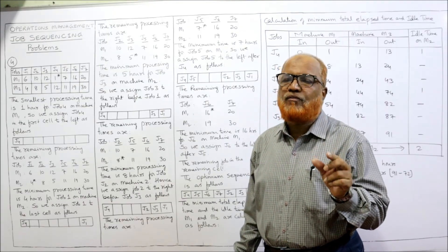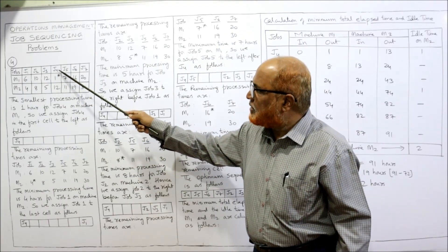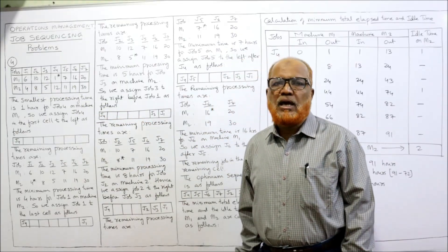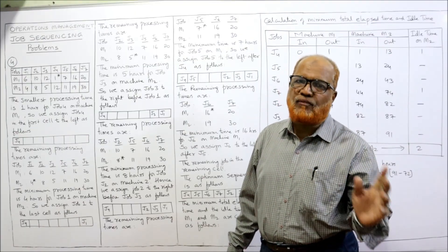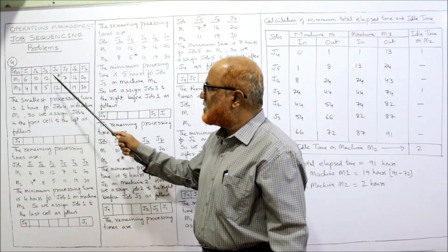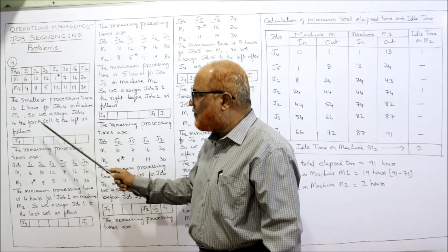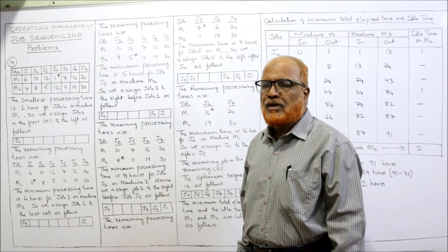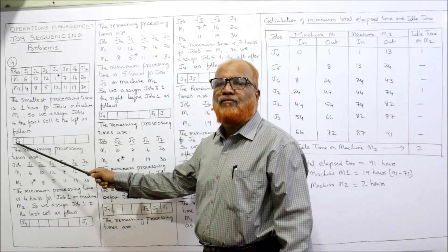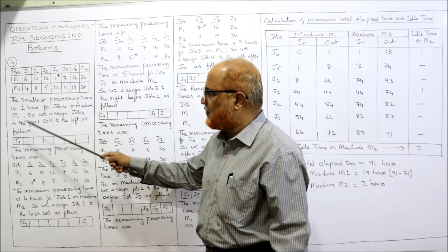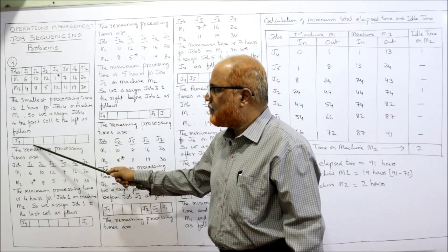First, locate the minimum processing time. Observing all the values, one hour is the minimum — for job J4 on machine M1. Machine M1 means we assign from the left. We make seven boxes because there are seven jobs, and in the first cell from the left we write job J4, because for J4 the minimum time is one hour on M1.